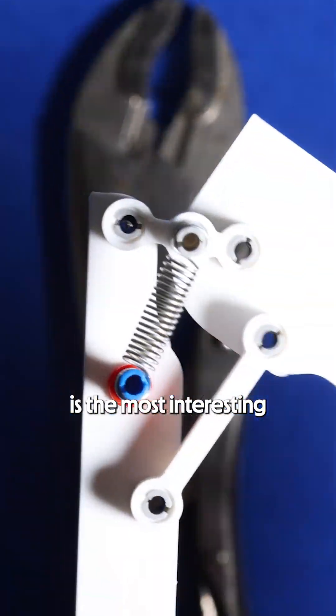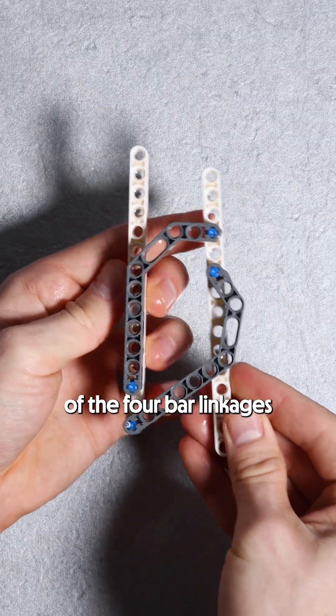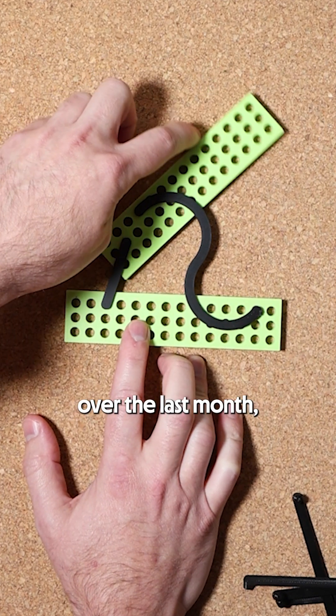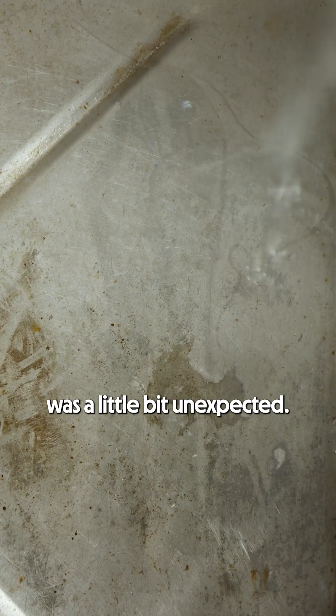The original vice grip is the most interesting of the four-bar linkages that we have found in our exploration of four-bar linkages over the last month, but the way that we discovered it was a little bit unexpected.